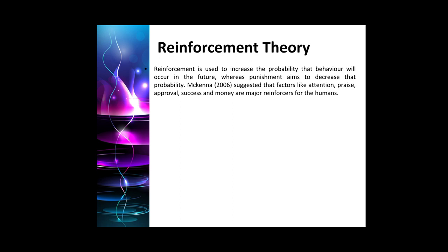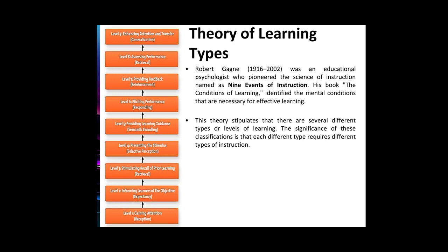Next is the theory of learning types. Robert Gagné was an educational psychologist who pioneered the science of instruction, naming it the nine events of instruction. The other term for this is the conditions of learning, in which he identified the mental conditions necessary for effective learning. This theory stipulates that there are different levels of learning, and the significance of these classifications is that each different type requires a different type of instruction.